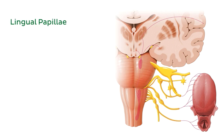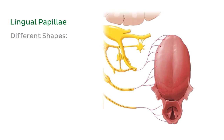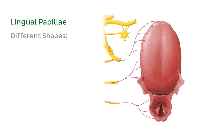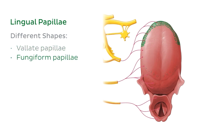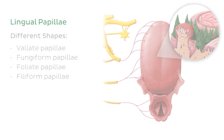Most lingual papillae are on the upper surface of the tongue. However, there are also some papillae on the soft palate, the upper esophagus, and on the epiglottis. There are a few different shapes of papillae found on different areas of the tongue. There are essentially four different types: the vallate papillae, the fungiform papillae, the foliate papillae, and the filiform papillae.